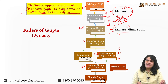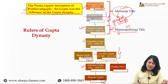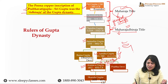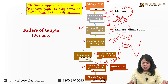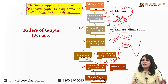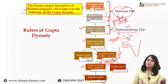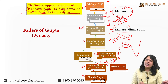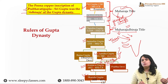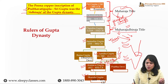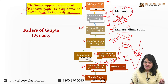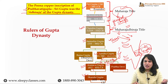Chandragupta Second ke baad mein important ruler hai Kumaragupta. Ham dekhte hain ki inka jo initial reign hai, woh kaafi peaceful hai. But around 450 CE, hum dekhte hain ki northwest se Hunas, ya jinn ko aap Huns kehte hain English mein, inka invasion hota hai - ek central Asian tribe ka. Aur iske baad aap dekhoge ki joh impact raha, uske wajah se Guptas ka decline shuru ho jaata hai, and Skandagupta Gupta dynasty ke last important ruler hain.